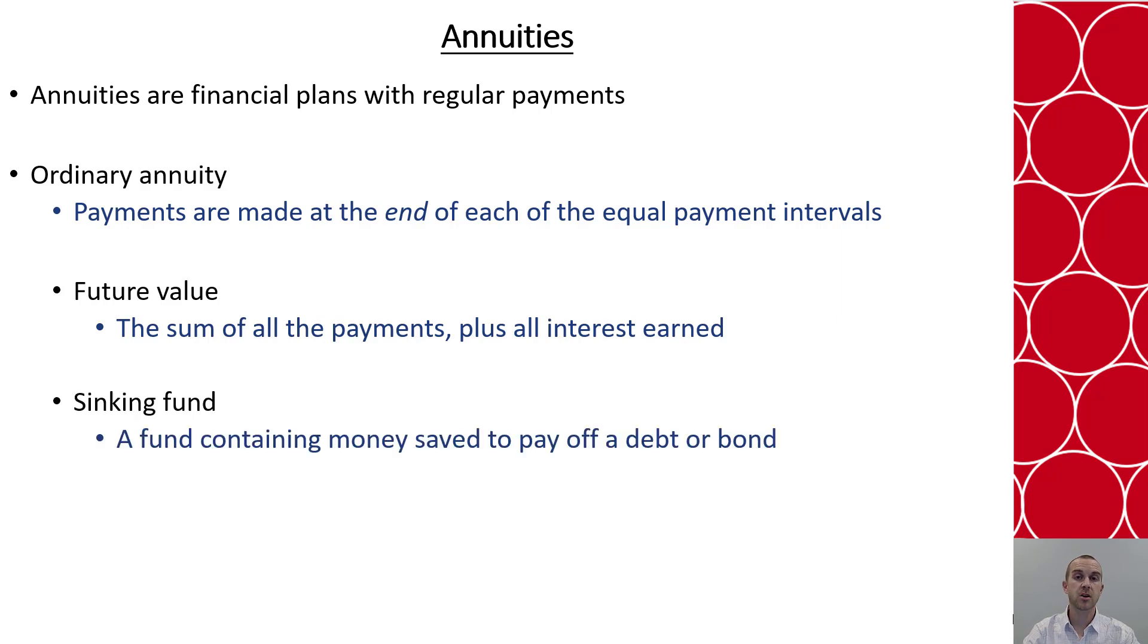Another type of ordinary annuity is called a sinking fund, and this happens when businesses or municipalities save money to pay off a debt or a bond in which they've borrowed.